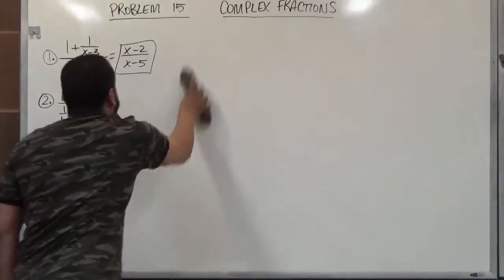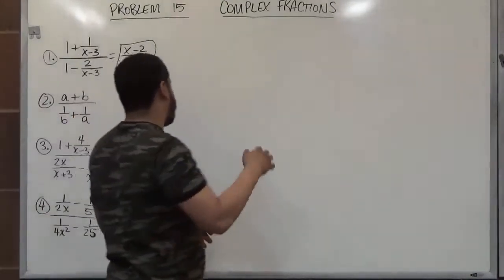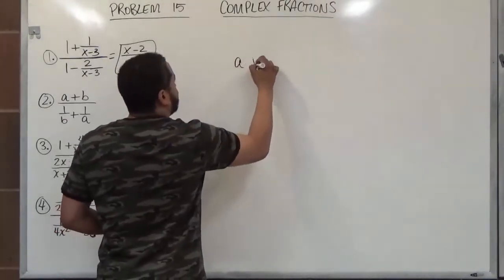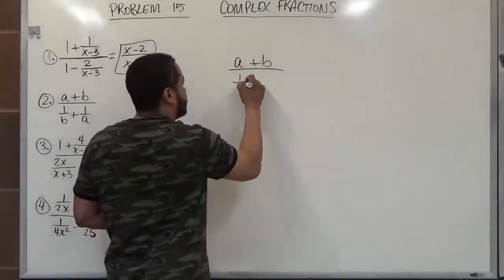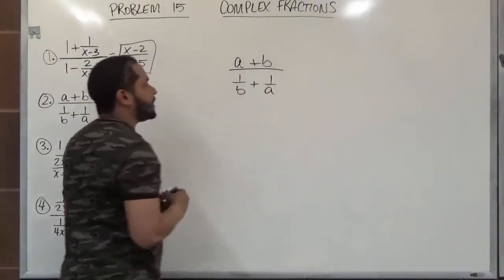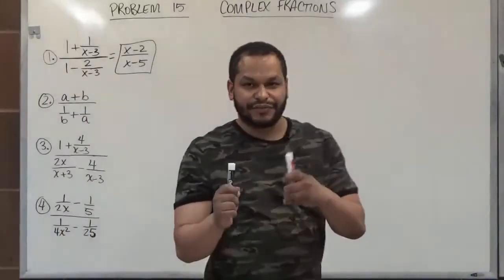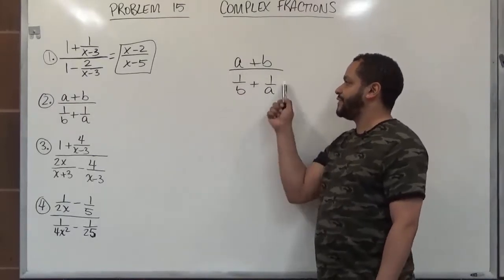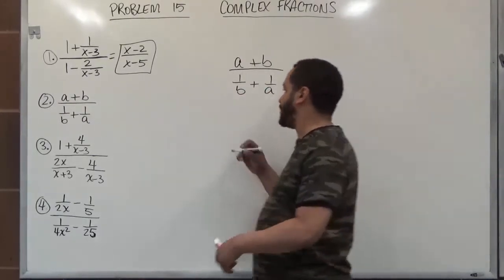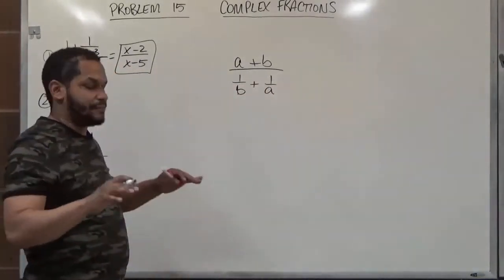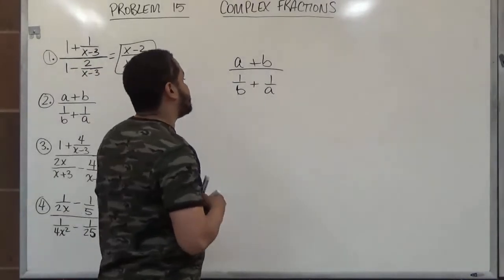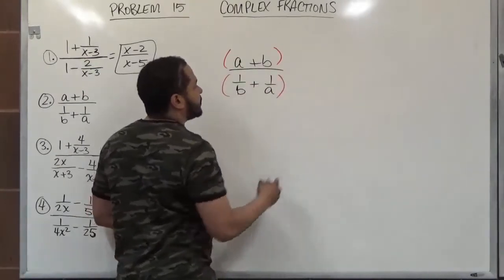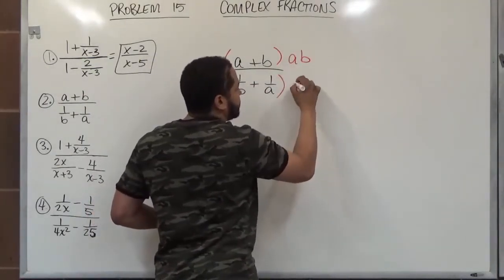Let's move on to the next one. Remember, if you want to stop and rewind this video feel free — that's the luxury of a YouTube video. For problem number 2 we have a plus b in the numerator, and 1 over b plus 1 over a in the denominator. Looking at every denominator of every complex fraction, we notice the denominators here are b and a. So the LCD of all the complex fractions in this case would be a times b. We're going to multiply the top by ab and also multiply the bottom by ab.